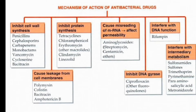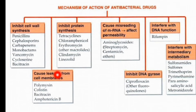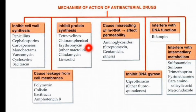The first class is inhibiting cell wall synthesis, like the beta-lactam family — penicillin, cephalosporin, carbapenem, monobactams, cycloserine, bacitracin. Another class is causing leakage from the cell membrane, like polymyxin, colistin, bacitracin, amphotericin B. Another class is inhibiting protein synthesis — tetracycline, chloramphenicol, erythromycin, and others like linezolid.